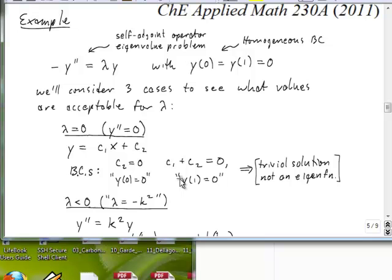Now, if we apply the boundary condition at Y1, then we have that C1 plus C2 is already 0, so C1 has to also be 0. And so what we found here is that choosing an eigenvalue of 0 would only allow solutions that are trivial solutions, and so it cannot be an eigenvalue, does not correspond to an admissible eigenfunction.